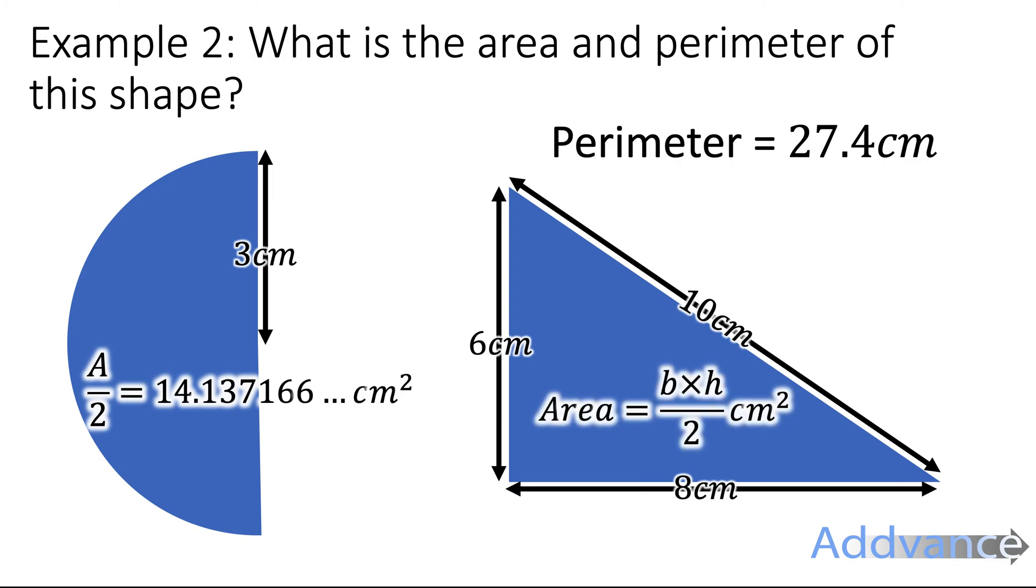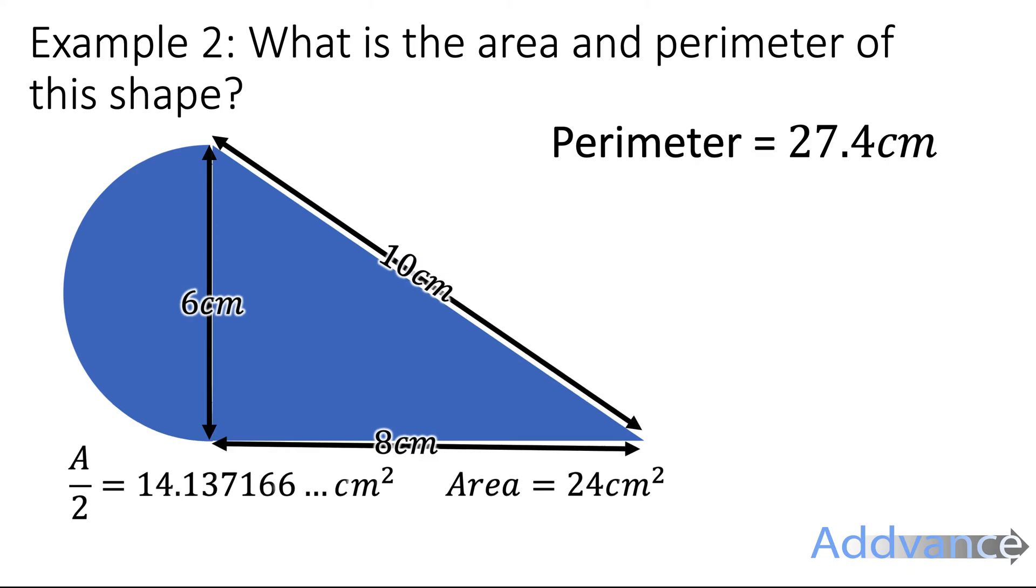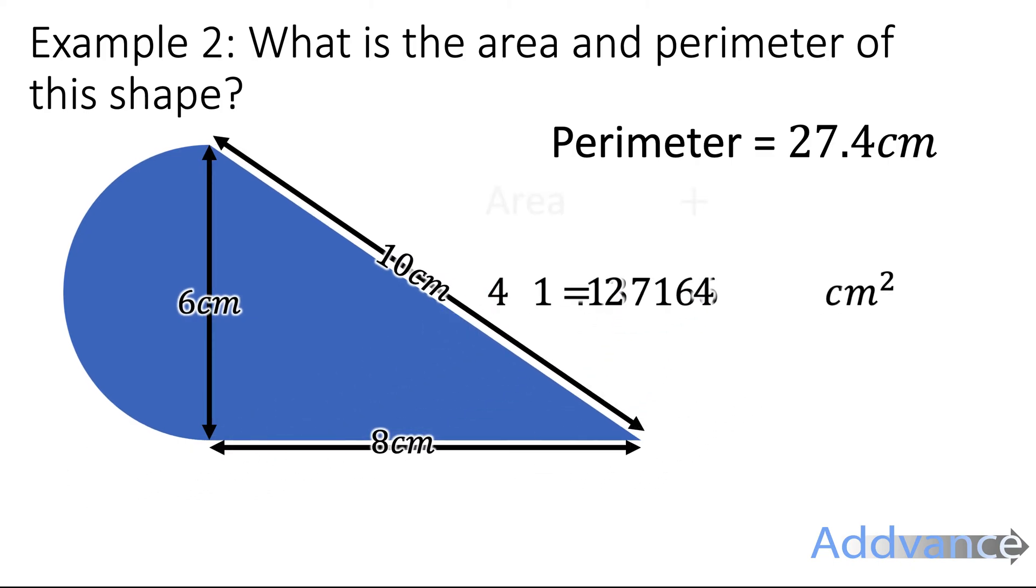Now the area of a triangle is given by base times height divided by 2, which is 6 times 8 divided by 2. 8 times 6 is 48, divided by 2 is 24 centimeters squared. To find the total area of the shape, we add them together. 24 plus 14.13 etc. is 38.1 centimeters squared.